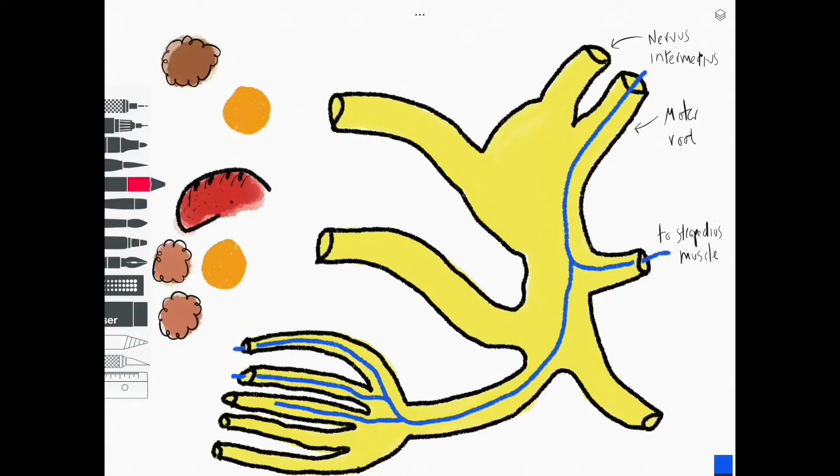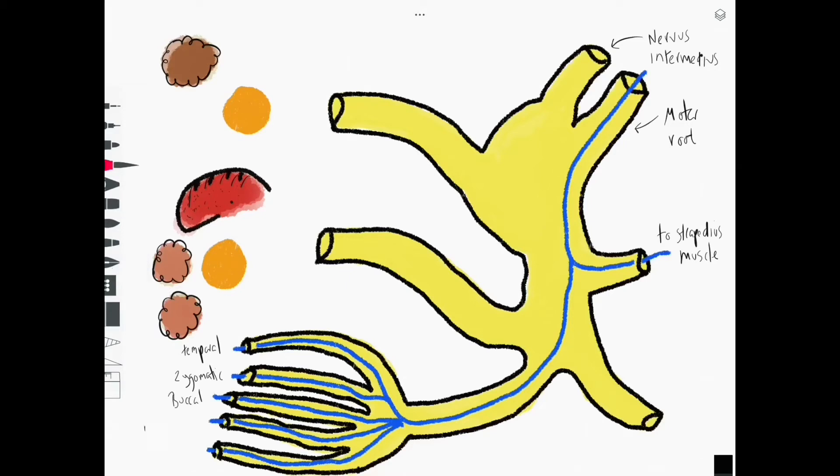So we can see this motor root in blue. The individual branches are the temporal, the zygomatic, the buccal, the marginal mandibular, and the cervical. So that's the motor branches here—facial expression plus the stapedius, and that's in blue.